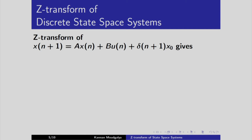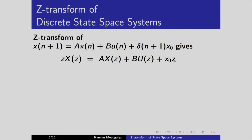Let us now take the Z transform of this equation, given that this model is valid for all n. Using the shifting theorem: z·X(z) = A·X(z) + B·U(z) + x₀·z. For a shift of n+1 (prediction), the Z transform gives z, whereas a delay gives z⁻¹. Rearranging and bringing the X(z) terms together: (zI - A)·X(z) = B·U(z) + z·x₀.